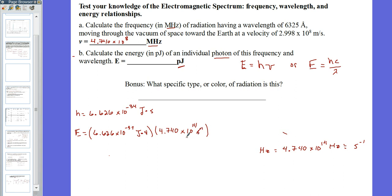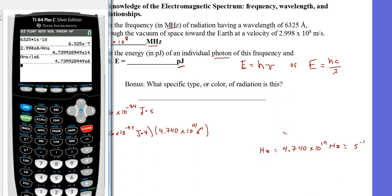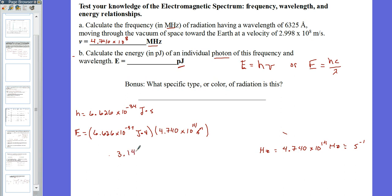From there, type in Planck's constant, 6.626 × 10^-34, multiply by your frequency 4.740 × 10^14. You multiply that and you get 3.141 × 10^-19 joules.